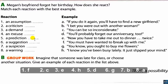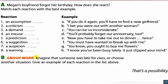The answers again: 1-F, 2-C, 3-E, 4-H, 5-D, 6-G, 7-B, 8-A. Part B — group work: Imagine that someone was late for class, or choose another situation. Give an example of each reaction from the list above.